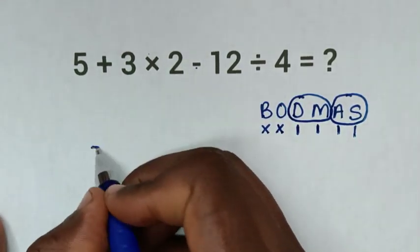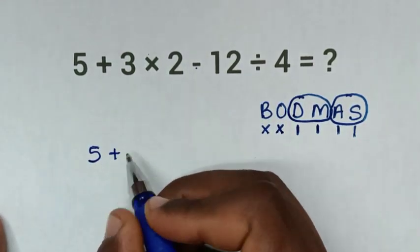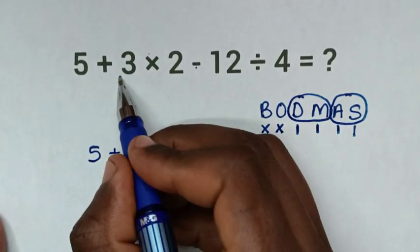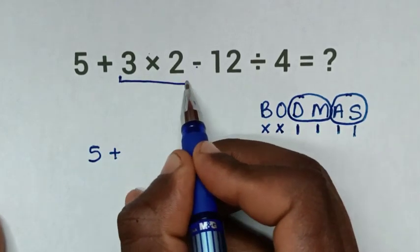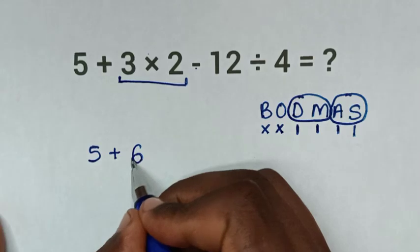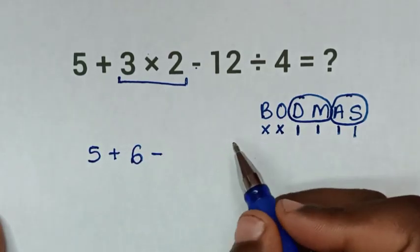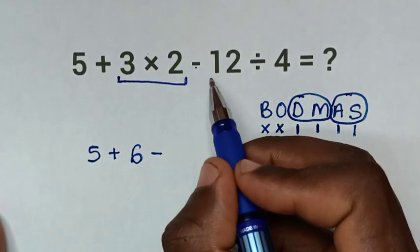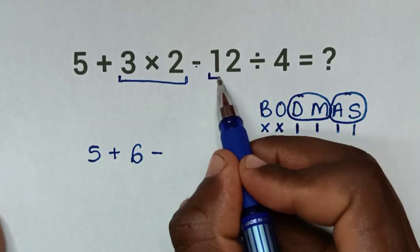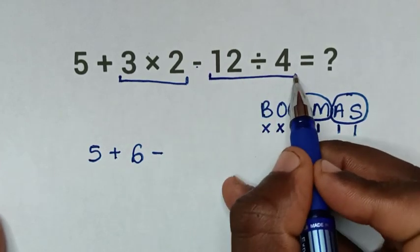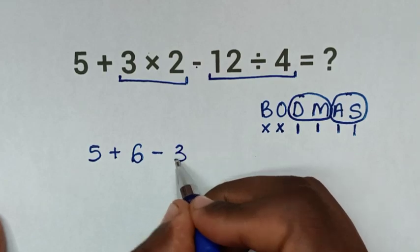So it will be 5, then plus, this group of 3 times 2 is 6, then minus, in here, because it is separate, we'll deal with this group again, of 12 divided by 4 is 3.